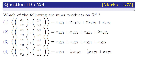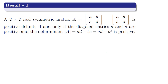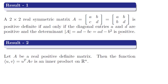Option 4: the inner product of (x1, x2) with (y1, y2) is equal to x1·y1 − (1/2)·x1·y2 − (1/2)·x2·y1 + x2·y2. Now in order to solve the question, we have to remember the following results. Result 1: a 2×2 real symmetric matrix A with elements [[A, B], [B, D]] is positive definite if and only if the diagonal entries A and D are positive and the determinant AD − B² is positive. Result 2: let A be a real positive definite matrix, then the function ⟨u, v⟩ = u^T · A · v is an inner product on Rⁿ.